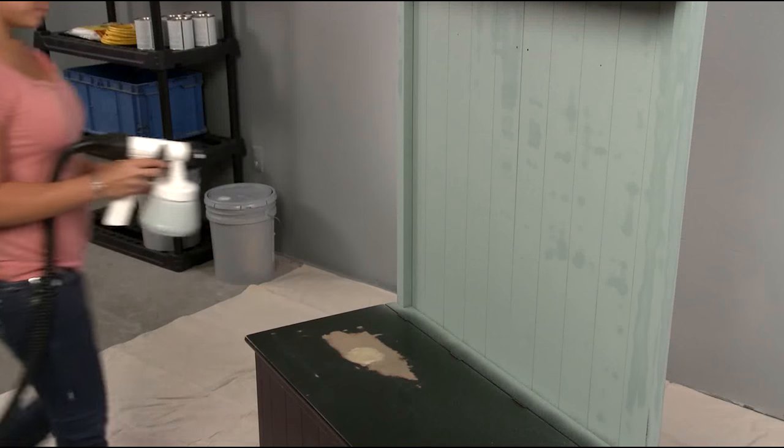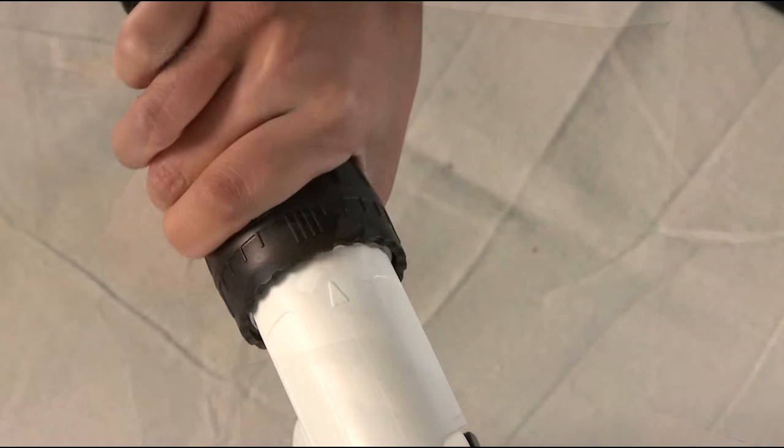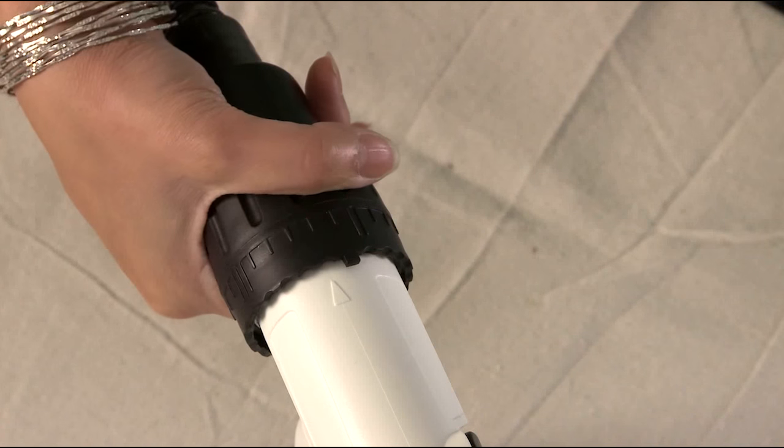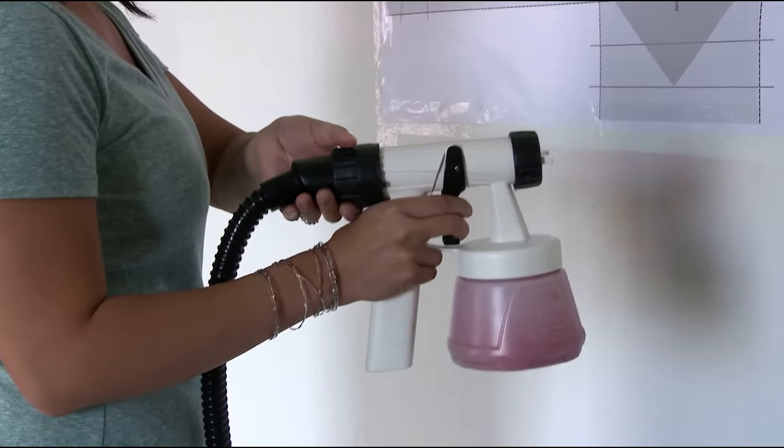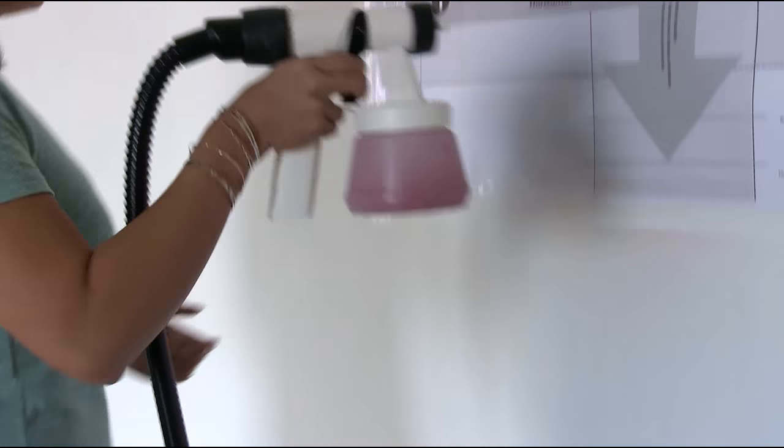Turning the dial on the back of the spray gun will increase or decrease the amount of paint spraying from the gun. Turning the material flow dial to the right will deliver less paint. Turning the dial to the left will deliver more paint. We recommend setting your material flow while practicing on the spray poster or piece of cardboard.